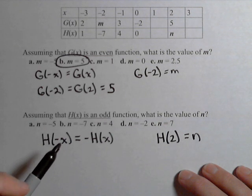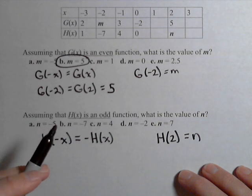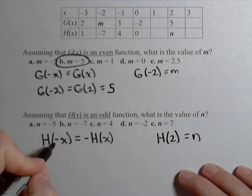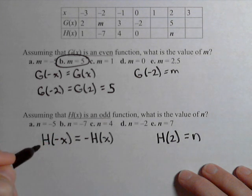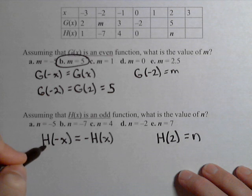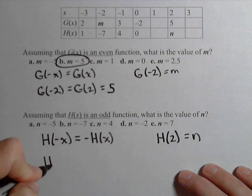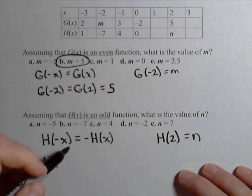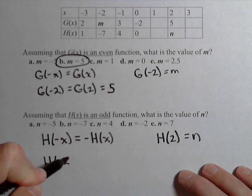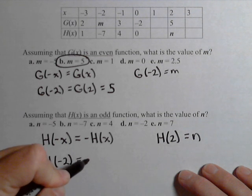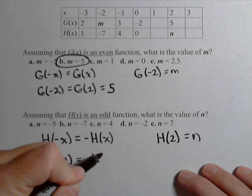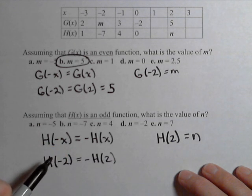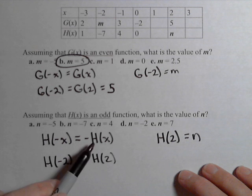So let's see what we can figure out. Let's apply this definition. We know that h of negative two is equal to negative h of two. This is by our definition.